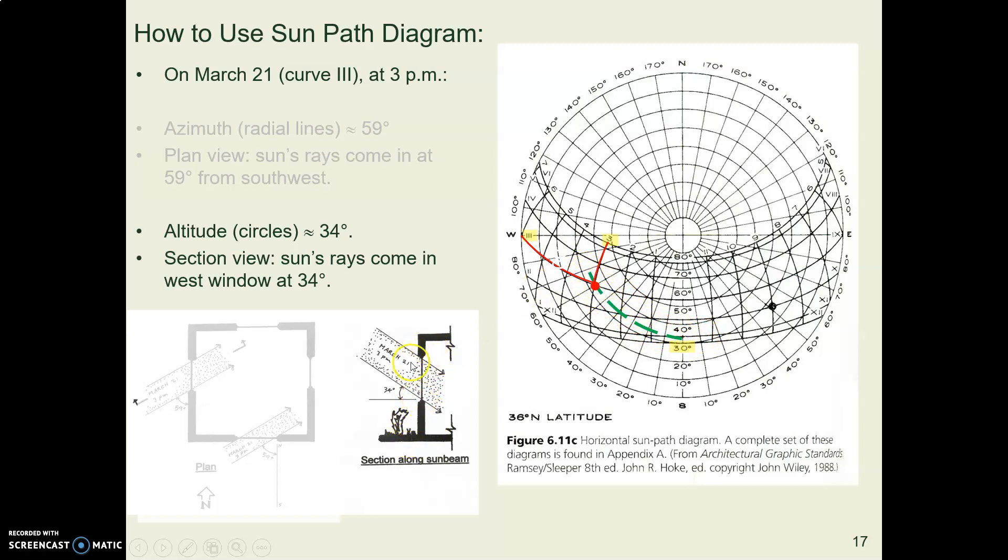So on your section view, you could draw some sunbeams coming through your window at 34 degrees and you would know how far back to keep your overhangs and where the sun is going to hit the floor when it gets into your room.